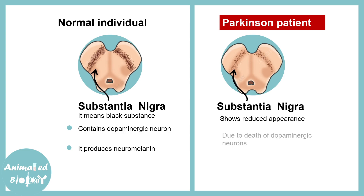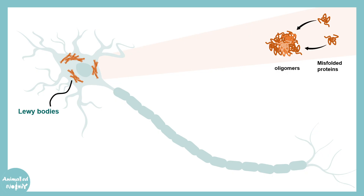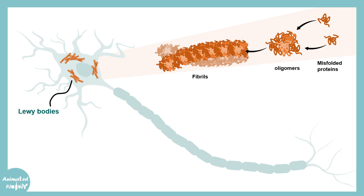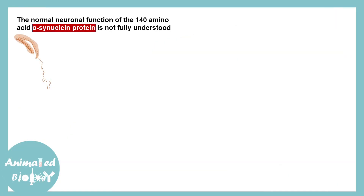This reduced appearance is due to the death of dopaminergic neurons. The pathological hallmark of Parkinson disease is Lewy bodies, which are protein aggregates. These are misfolded alpha-synuclein proteins that form oligomers and fibrils and get deposited onto the neurons — these are the characteristic pathological hallmark.